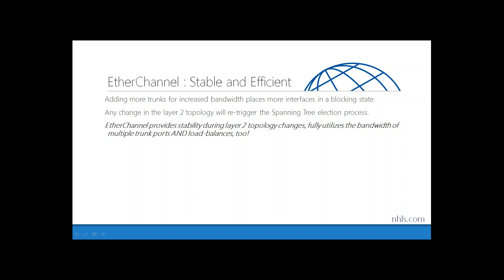Let's take a look at EtherChannel. EtherChannel is a protocol that provides stability in our layer 2 network, preventing spanning tree from recalculating if there is a minor change in our layer 2 topology. EtherChannel also allows us to fully utilize the bandwidth of multiple trunk ports and load balance across those multiple trunk ports. We look at spanning tree as a way to avoid loops; EtherChannel extends that further by providing load balancing and stability.